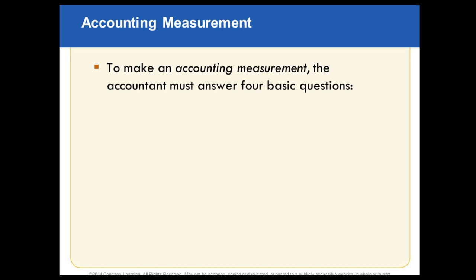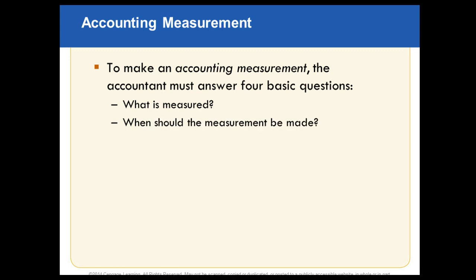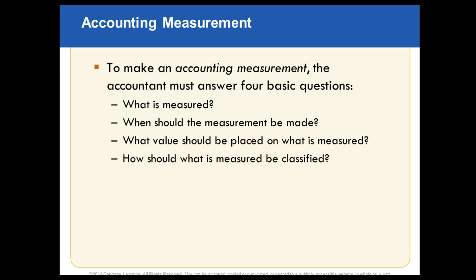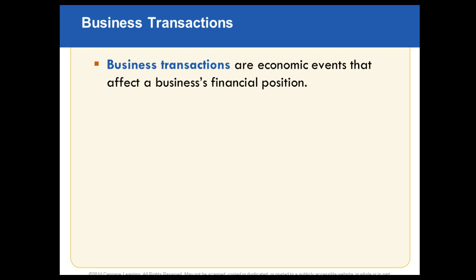Accounting measurements — we're going to ask ourselves: what's being measured? When should we measure it? What value should we place on it? And how should we classify it? So accounting measurement is what, when, what value, and the classification — all as it relates to these business transactions, these economic events. An economic event will affect and change the financial position of a company. If it doesn't change the financial condition of a company, then it's not an economic event.